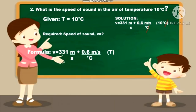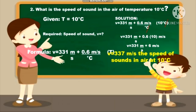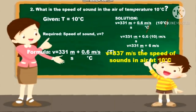Next, we cancel the unit degrees Celsius. The result is 331 m/s plus 0.6 times 10 m/s. Multiplying 0.6 by 10 gives us 6 m/s. Adding 331 m/s plus 6 m/s gives us the final answer of 337 meters per second, which is the speed of sound in air at 10 degrees Celsius.